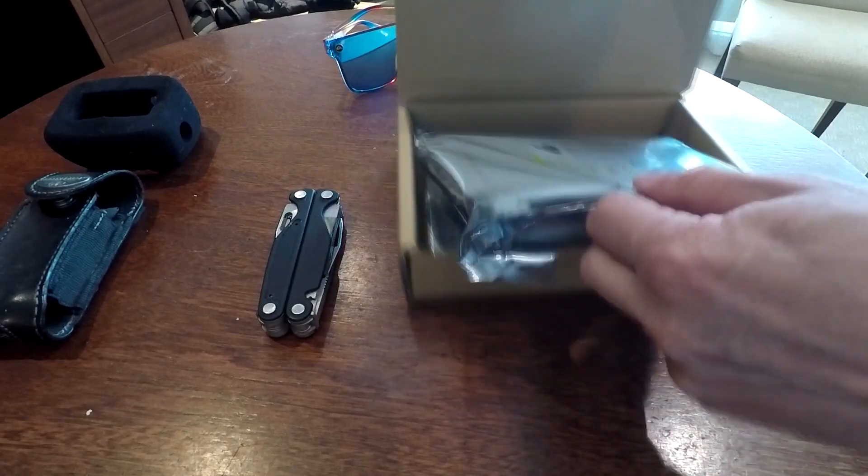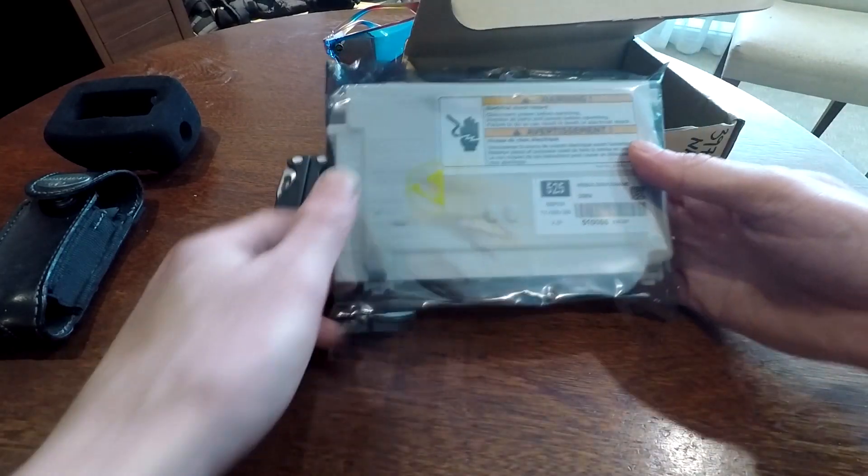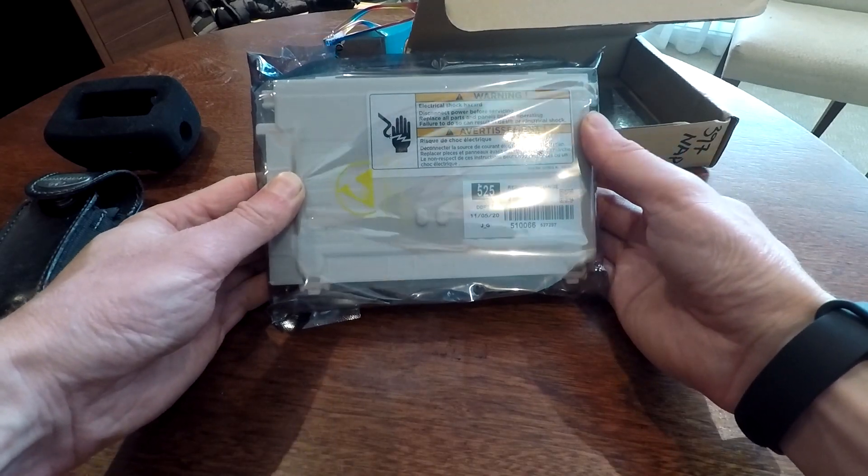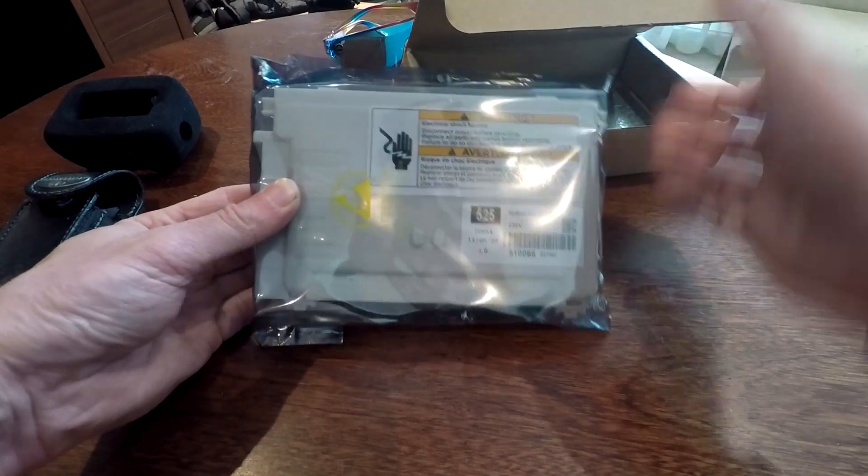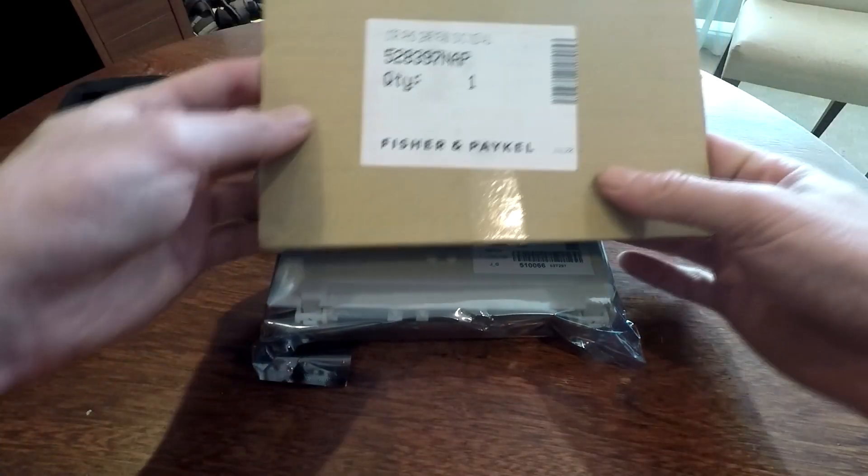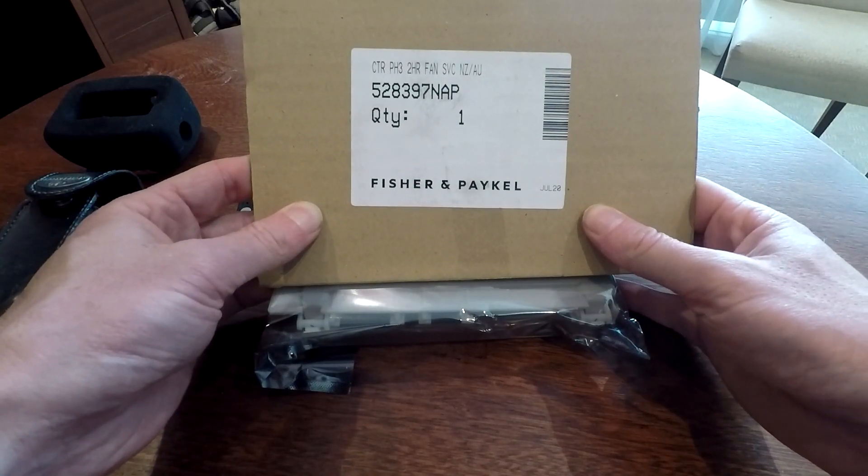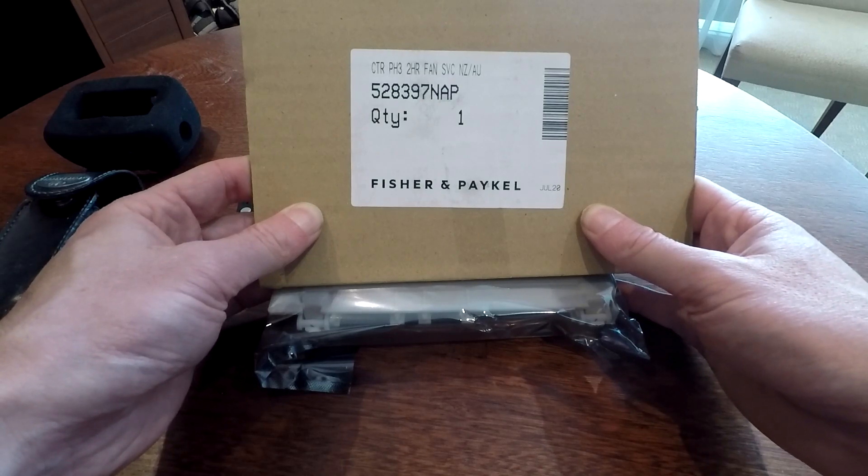This is the part. This is 520 to 5, DDP 3.5. The part number is 528397NAP. And we just have to find out if it's going to work.